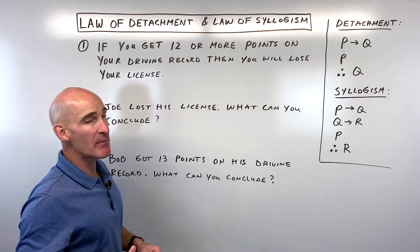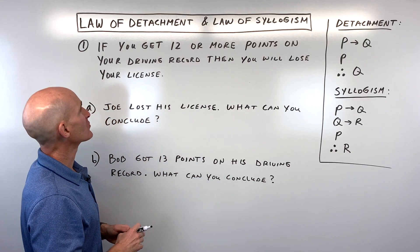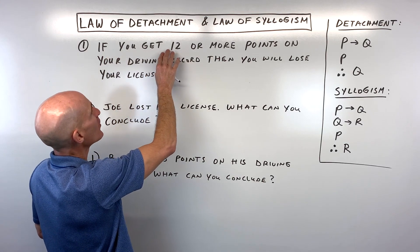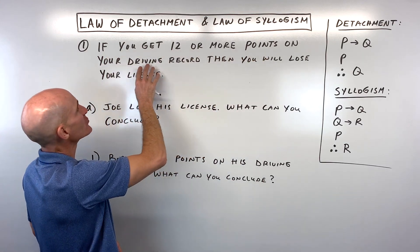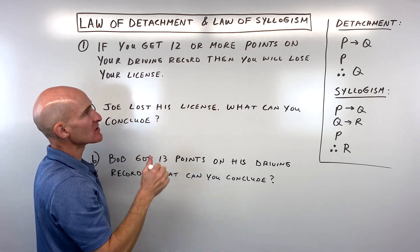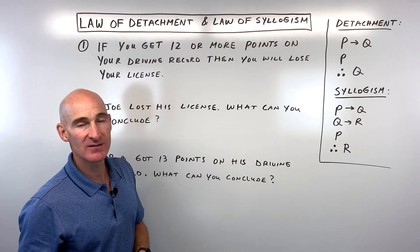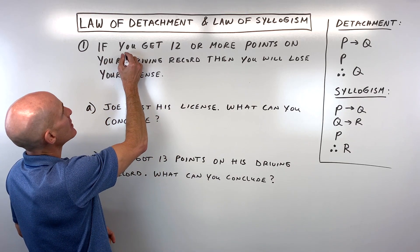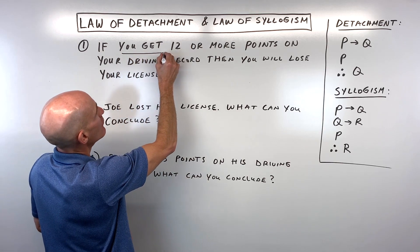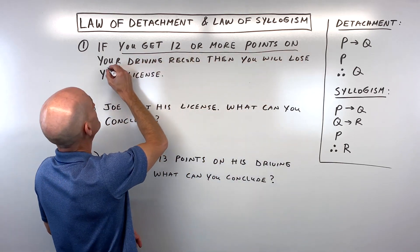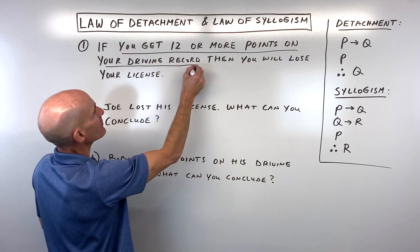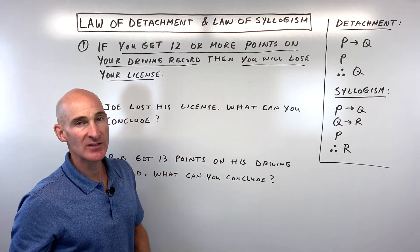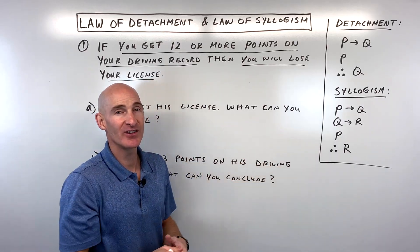The first one — these are not mathematical ones, they're just kind of fun real-life examples. If you get 12 or more points on your driving record, then you will lose your license. Whatever comes after the 'if' is our hypothesis: you get 12 or more points on your driving record. Then whatever comes after the 'then' is the conclusion: you will lose your license. So basically, if you speed too many times, you're going to lose your license.